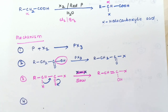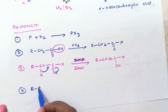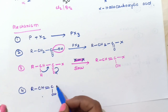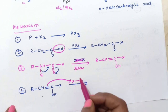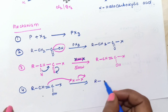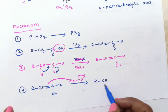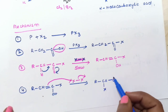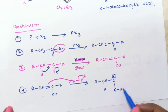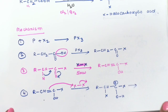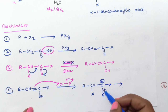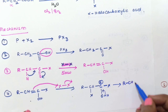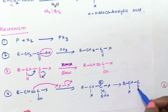In the fourth step, the enol intermediate reacts with another halogen molecule. The double bond attacks the halogen, which attaches to the alpha carbon, giving a carbocation. The bond then shifts, resulting in RCHX–C(=O)X as the intermediate product.